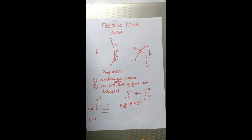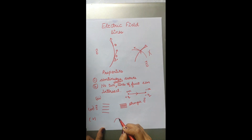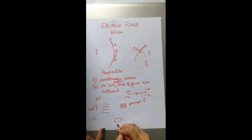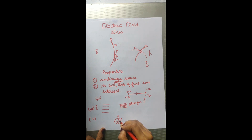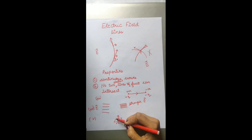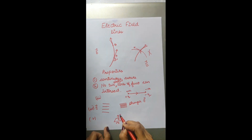The fifth property: electric field lines are always normal to the surface of a conductor. Suppose I have a plane surface — the electric field line due to a charge +q on the surface would be radially outward, perpendicular to the surface. No matter what the shape of the conductor, the electric field E will always be normal to its surface.